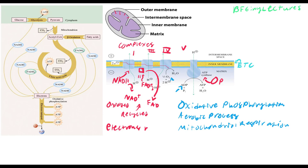The electrons reduce O. On an exam, if it says the electrons reduce O2 — no, that's wrong. It reduces O2 into H2O, creating water from oxygen. This water is actually the source of metabolic water, which is used in the TCA cycle for certain reactions. That water came from the mitochondria, from these reactions.